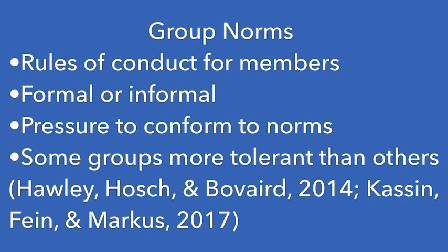Social influence can easily be seen within groups. Groups establish norms, which are basically the rules of conduct for their members. These rules can be formal or informal, and there is typically pressure to conform to the group's norms because any deviation from the established norms is seen as a threat to members' sense of uniformity and cohesiveness.